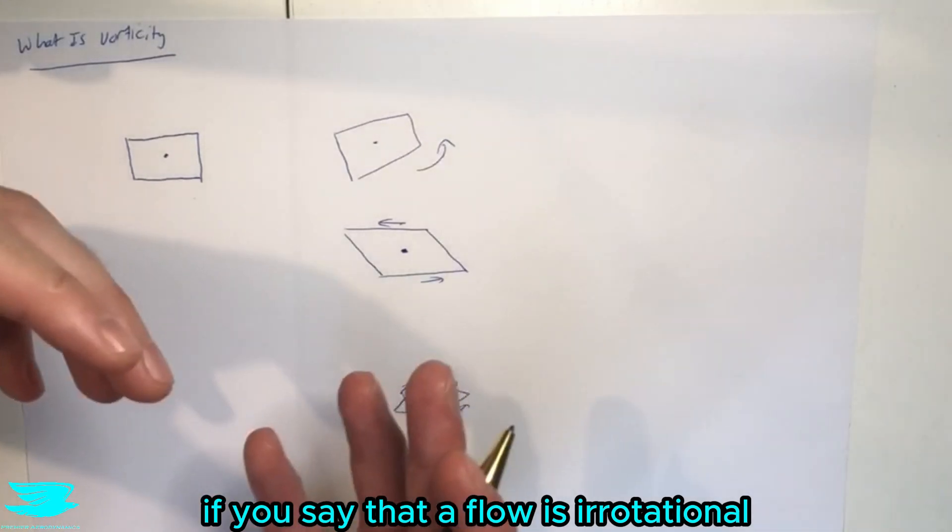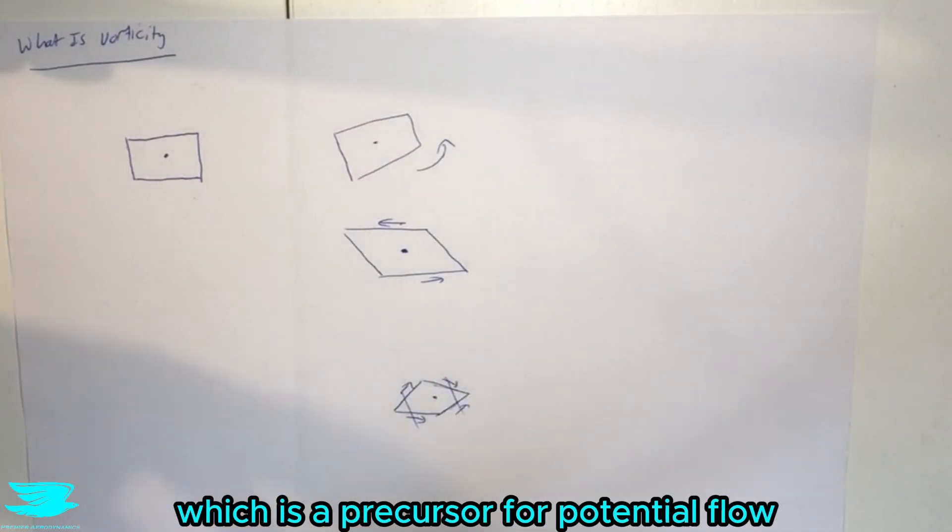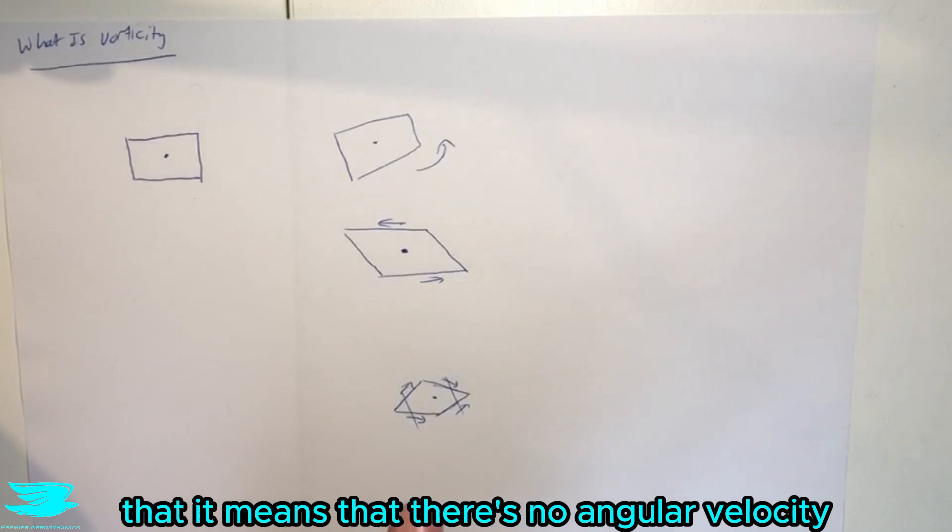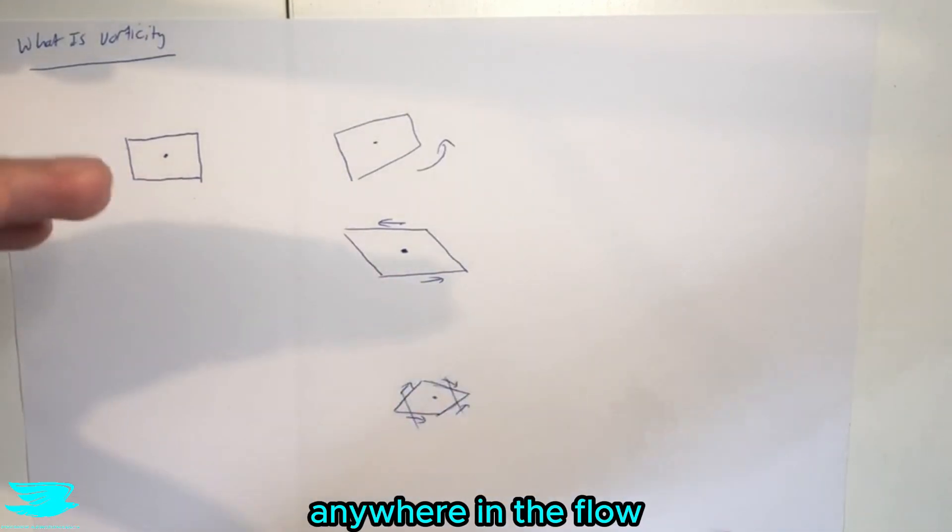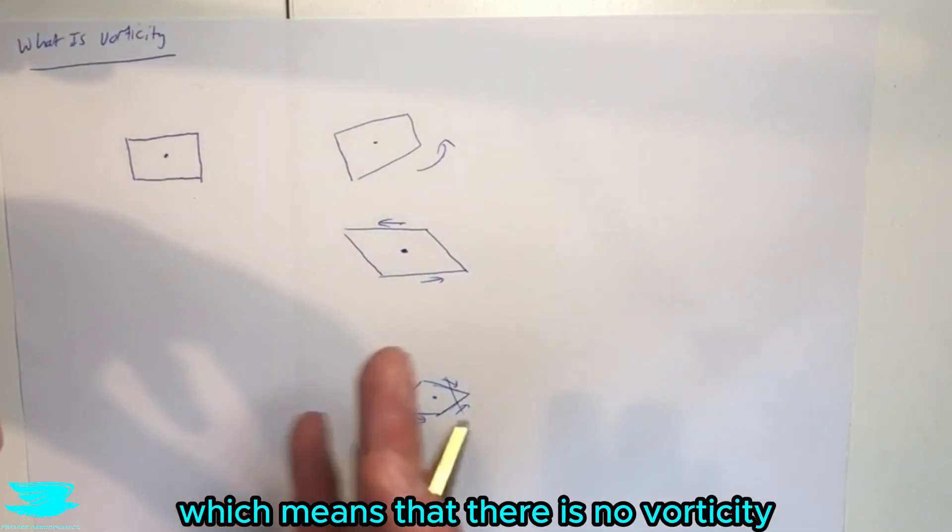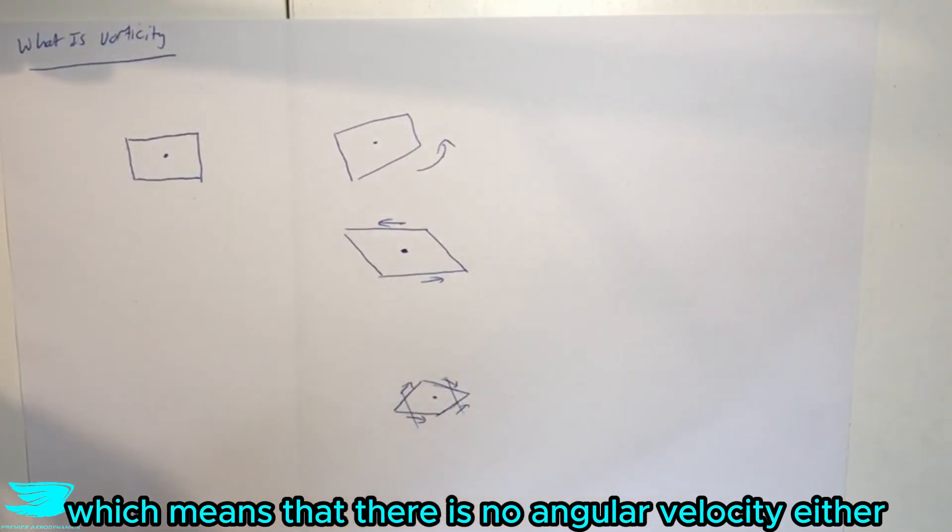If you say that a flow is irrotational, which is a precursor for potential flow, then it means that there is no angular velocity anywhere in the flow, which means that there is no vorticity.